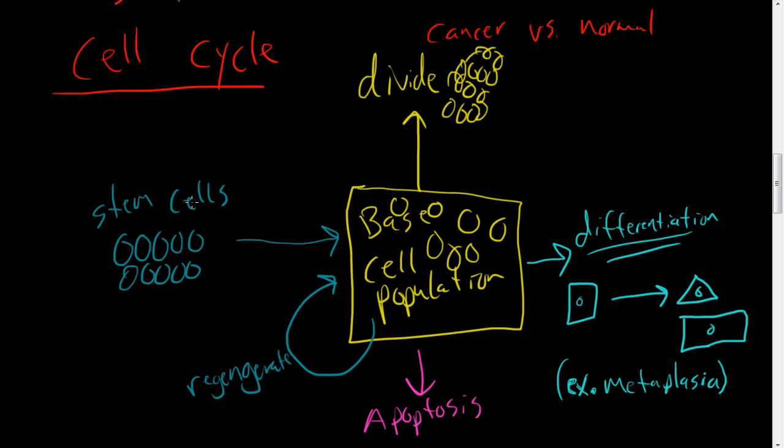So you have stem cells and they can turn into a base cell population. And then this base cell population can regenerate itself by just dividing and creating more, maintaining this base cell population. They can undergo apoptosis if this base cell population is no longer needed, or some of these cells are not needed. You got 500 cells and you only need 250, the 250 will undergo apoptosis and die. Or it can divide, it can proliferate, it can create tons and tons of them if they need to. Or they can differentiate and turn into different cells. So that's the big picture idea.